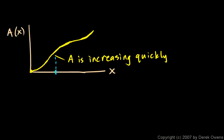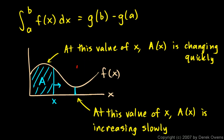And here, A is increasing slowly. And this x value right here corresponded to the point where the value of the function is at a low point.